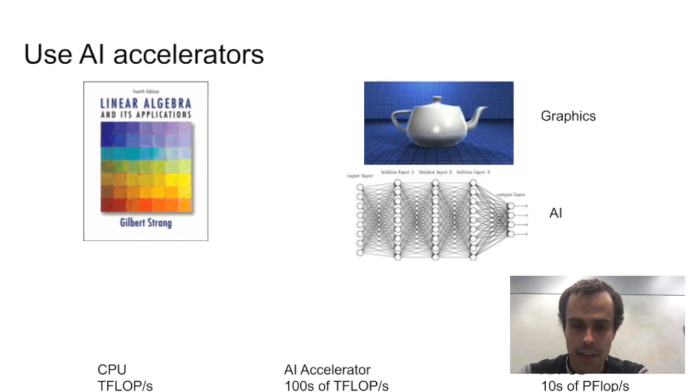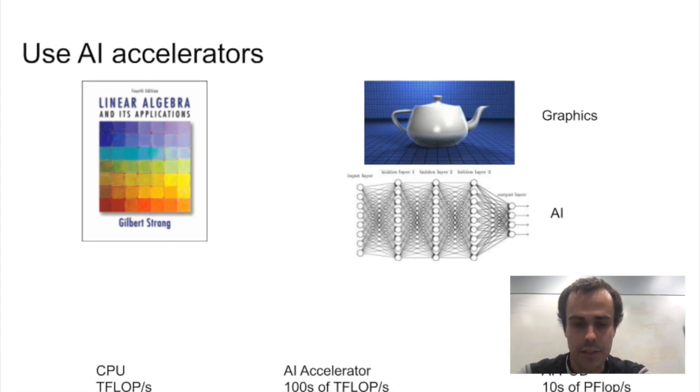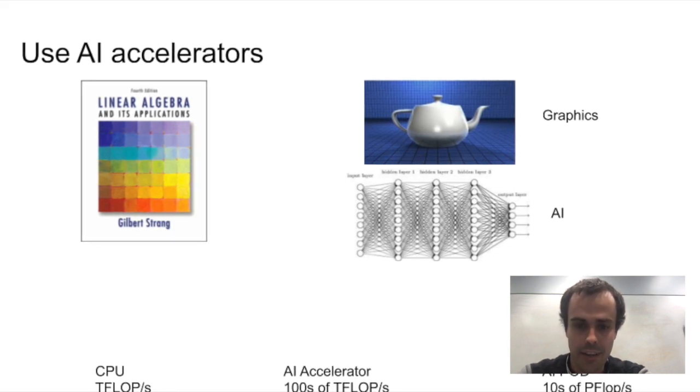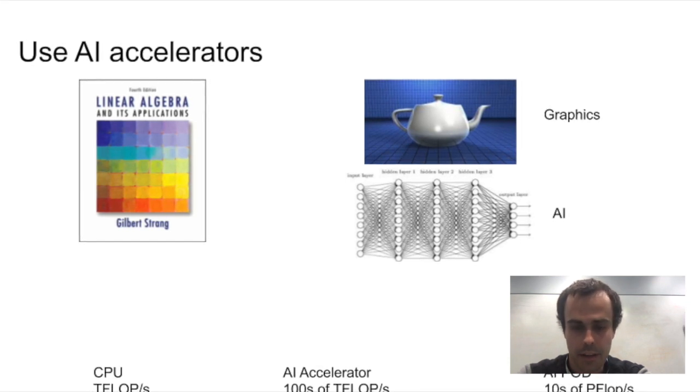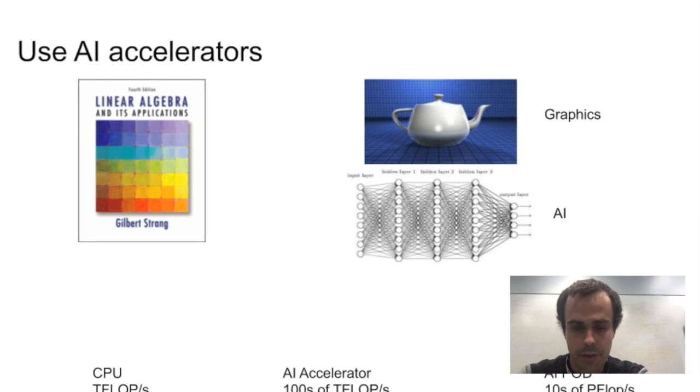CPUs exploit technologies like branch prediction, heavily pipelined high clock frequencies, out-of-order execution. Those things are really great for sequential programs like the apps on my smartphone, but linear algebra is very different than that.